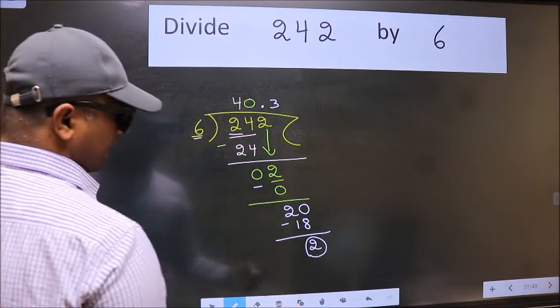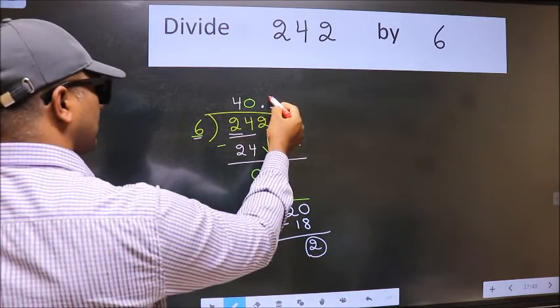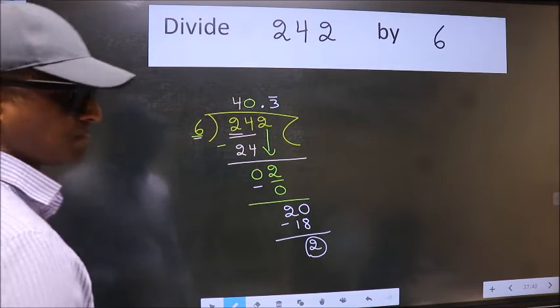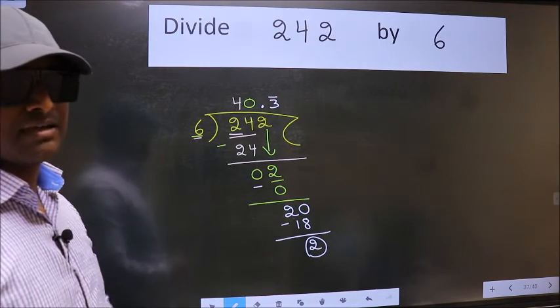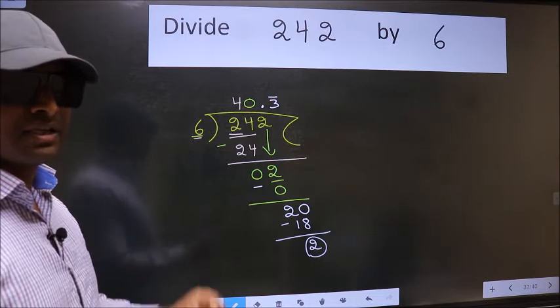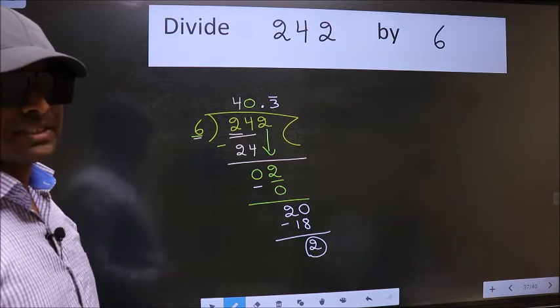We got 2 again. That means we get a bar on this number. Did you understand where the mistake happens? You should not do that mistake.